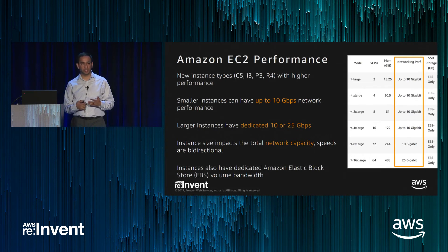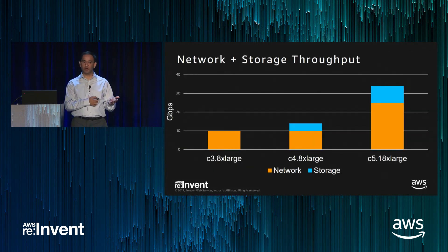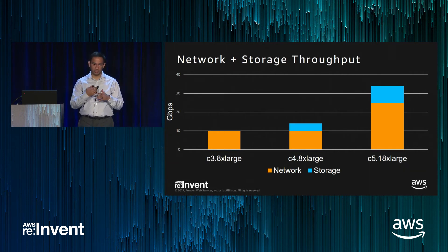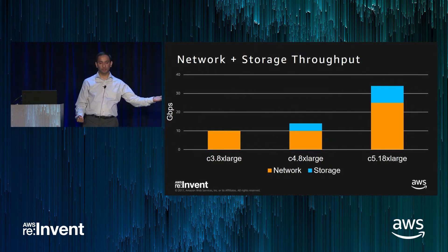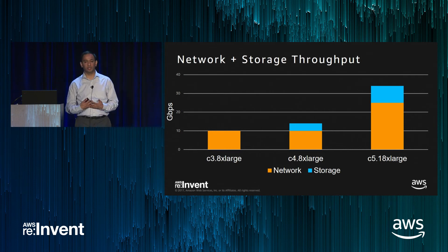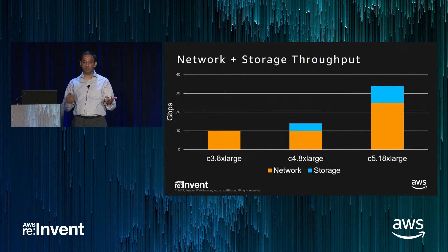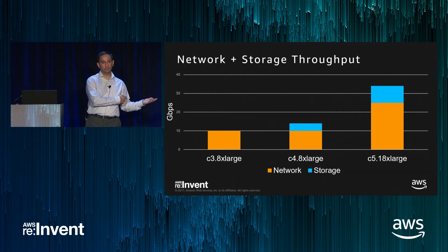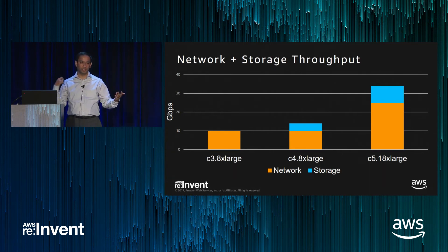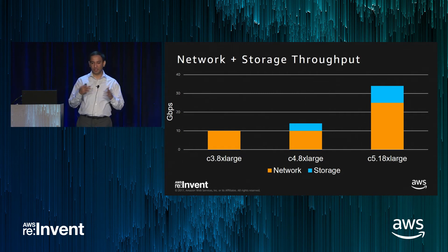Network bandwidth is bi-directional — you get that performance in each direction separately. On EBS optimization: with C3 you had a single 10 Gbps pipe shared between network and storage. With C4, EBS Optimized became the default at no extra charge, giving a dedicated 10 Gbps pipe plus additional storage bandwidth. With C5, we've more than doubled both network and storage throughput, and they scale independently — your application doesn't have to choose between being network-bound or storage-bound.